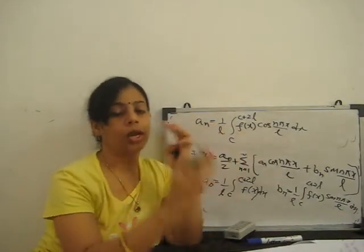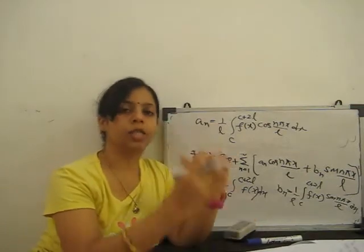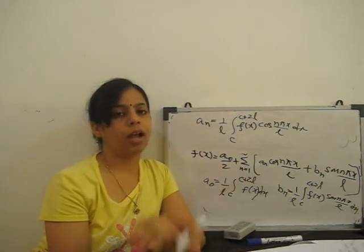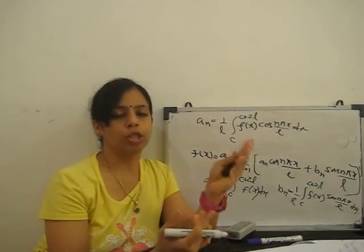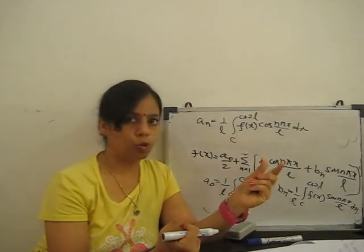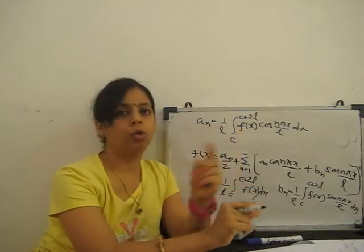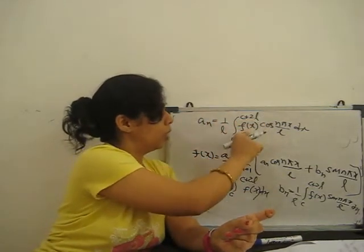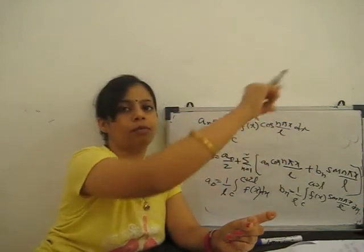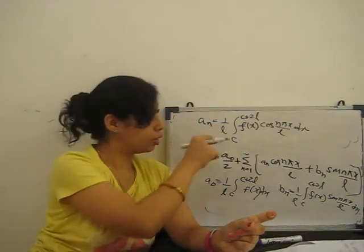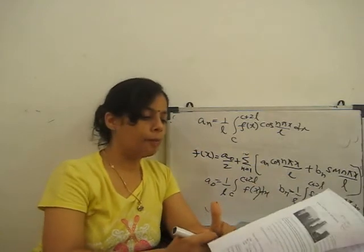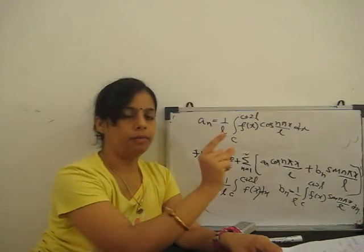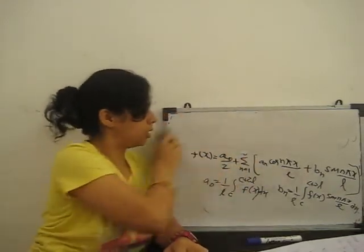At the place of π, you replace with L — that is the general term. If L is any constant 2, 3, 4, then it is (1/L) from c to c+2L. For discontinuous functions also, if the function is given from 0 to 2 (0 to 1 as f1 and 1 to 2 as f2), you break the integral at the discontinuity point and integrate each piece separately.